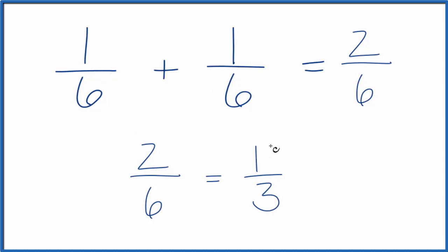So one-sixth plus one-sixth, that gives us one-third, or two-sixths.